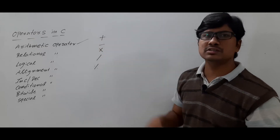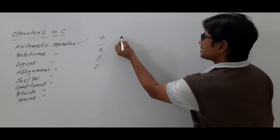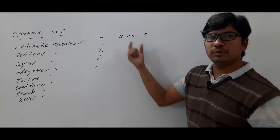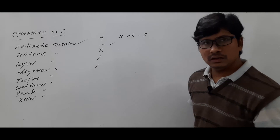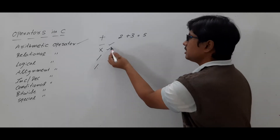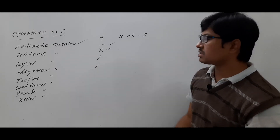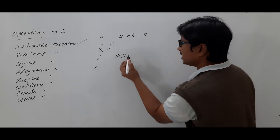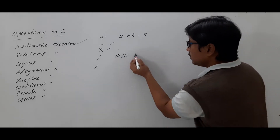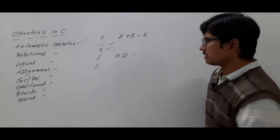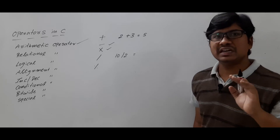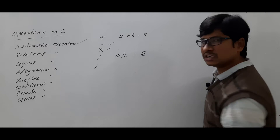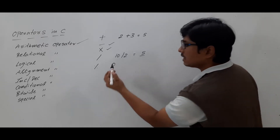You already know what addition is. Suppose if you have two plus three, it will give the output as five. You already know about addition, subtraction and multiplication. Now let me discuss about division and modulus. If you are dividing 10 by 2, you will get two things: one is the quotient and the remainder. The division operator will give you the quotient and the modulus operator will give you the remainder.